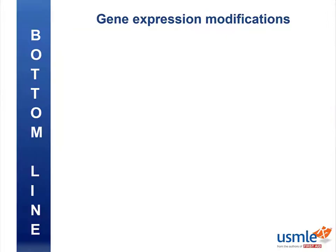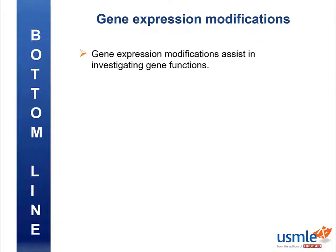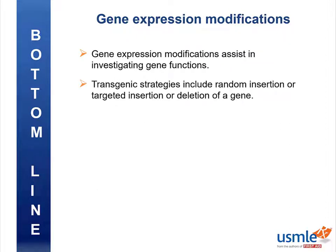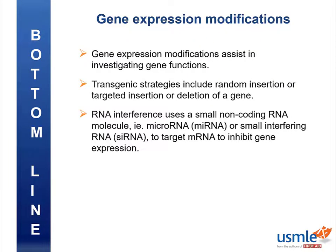Here's the bottom line: gene expression modifications assist in investigating gene functions. Transgenic strategies include random insertion or targeted insertion or deletion of a gene. RNA interference uses a small non-coding RNA molecule — a microRNA or small interfering RNA — to target mRNA and inhibit gene expression. Please give this video a thumbs up if you liked it, and feel free to submit a comment if you have any feedback or questions. Thanks for joining me. Study hard.